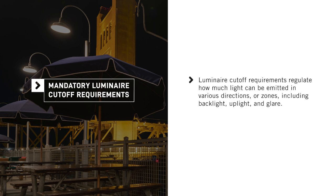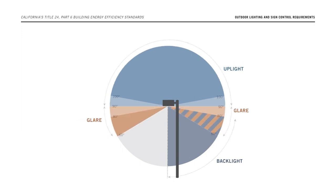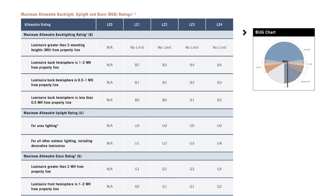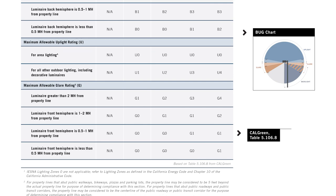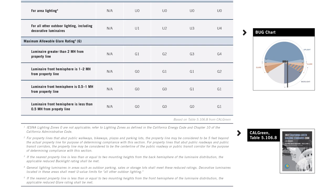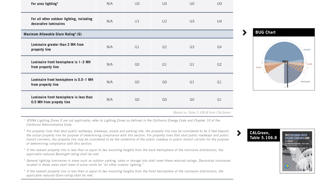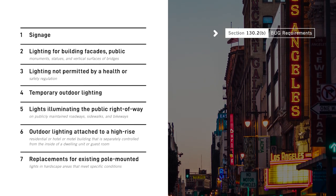Now let's talk about the mandatory requirements pertaining to luminaire cutoff and the exceptions. Luminaire cutoff requirements regulate how much light can be emitted in various directions or zones, including backlight, uplight, and glare. Many types of outdoor lights must comply with these cutoff requirements, which are collectively referred to as BUG requirements. The Energy Code's BUG requirements specify maximum zonal lumens and only apply to outdoor lights rated 6200 initial lumens or more. Specific requirements are provided in Title 24, Part 11, Section 5.106.8, also referred to as the CalGreen Code. Seven types of outdoor lighting need not comply with the BUG requirements; illuminated outdoor signs are one such example.